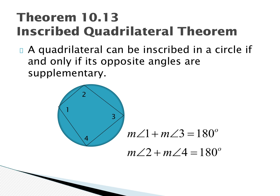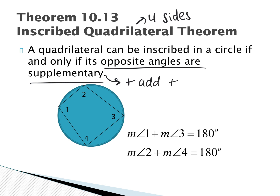The Inscribed Quadrilateral Theorem: a quadrilateral can be inscribed in a circle if and only if its opposite angles are supplementary — meaning they add up to 180 degrees. Opposite angles are non-adjacent angles across from each other. In this diagram, angles 1 and 3 are opposite, and angles 2 and 4 are opposite.